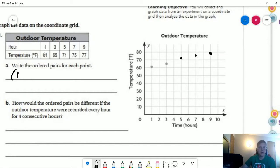So our ordered pairs, I'll just write the first one, would be (1,61). Our hours are going to be across the x-axis, so that number will go first. Our next one would be (3,65), then (5,71), (7,75), (9,77).